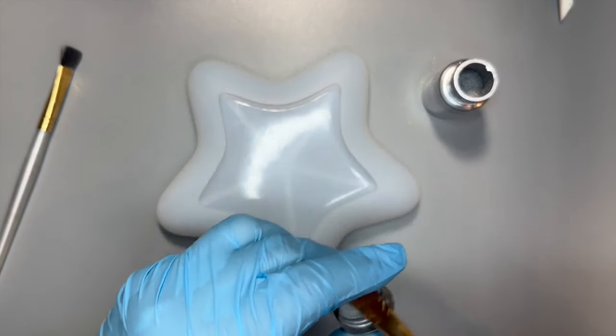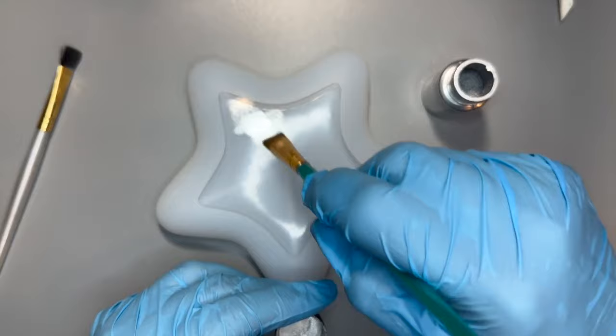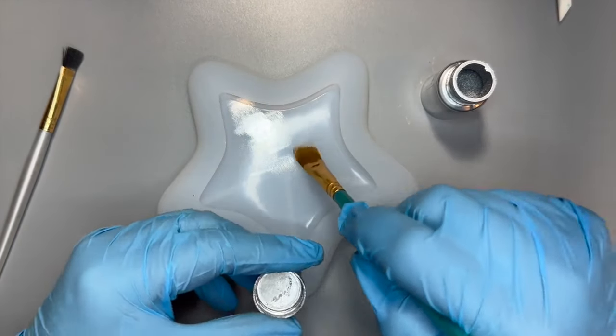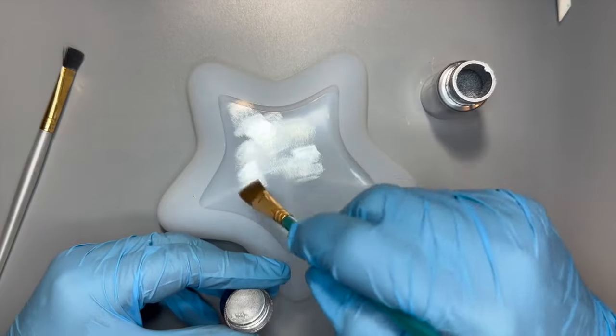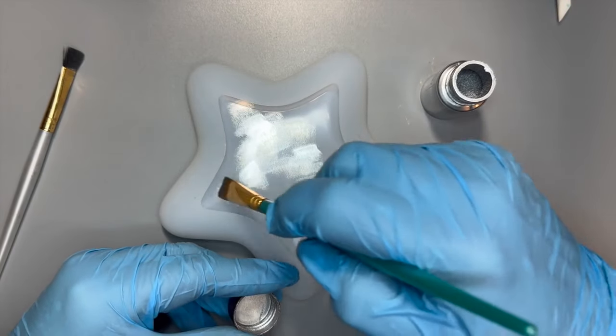It's metallic powder from Let's Resin. I use this on the bottom of my dishes. It comes in a five pack and has silver, bronze, copper, pale gold, and rustic gold. It gives a really nice finish.